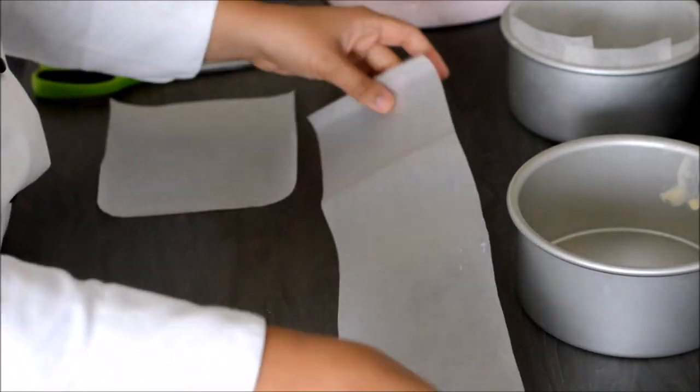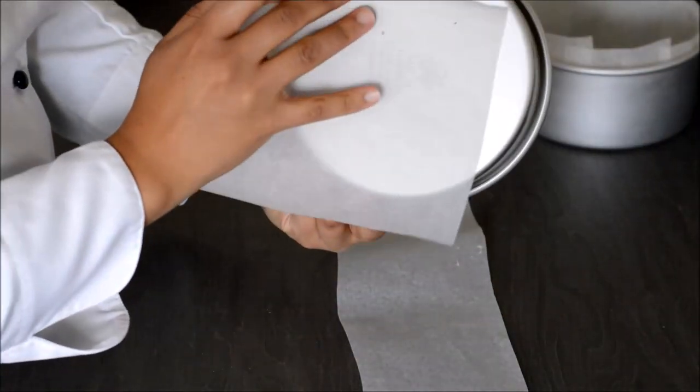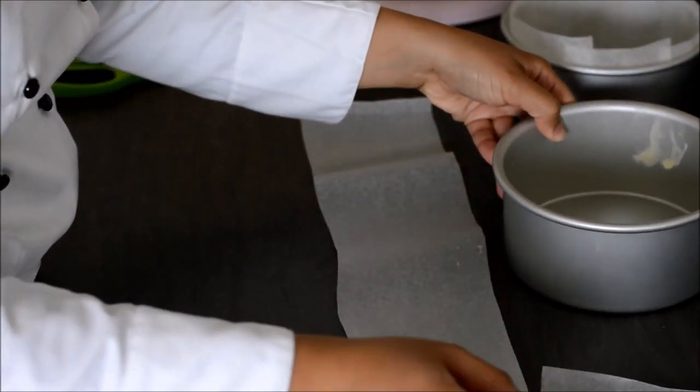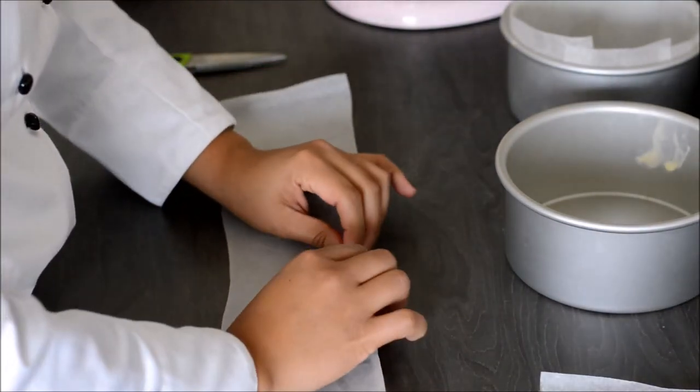But that's fine. So we have that and I've also cut out a square piece of paper that is a little bit larger than the bottom of your pan and I'll show you how to get that really neat circle as well. So with this piece, for the length of the pan,